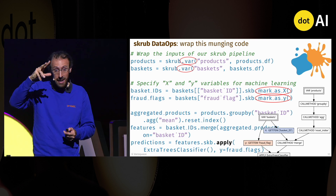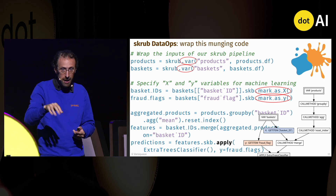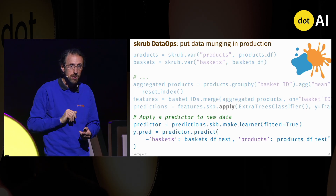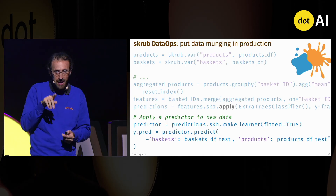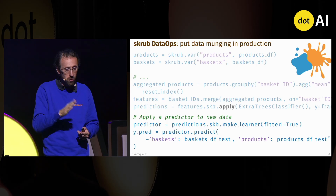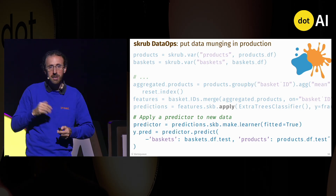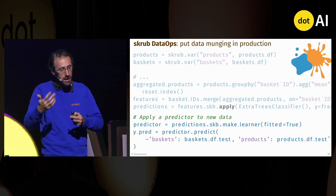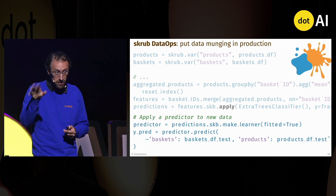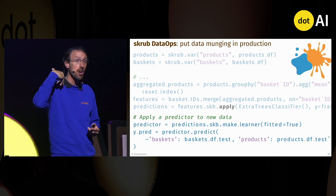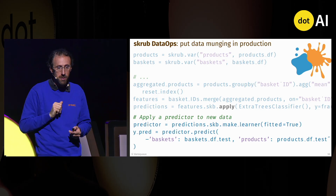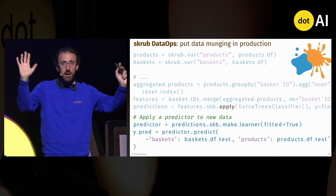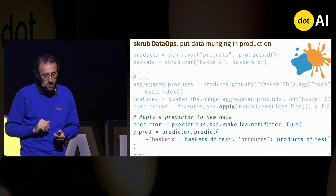The benefit is that Skrub has built a computational graph in the background by tracking everything you do. With this computational graph, I can reapply all these transformations to new data. When I call .skrub.apply, it knows to separate out the fit and the transform — whether I'm running in fit or transform mode. Out of this pipeline, I can build a learner that can predict from multiple tables of interest.